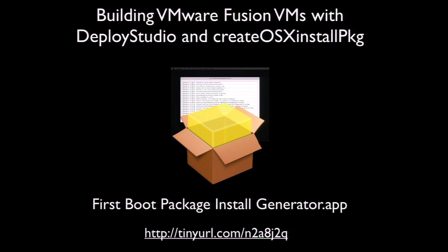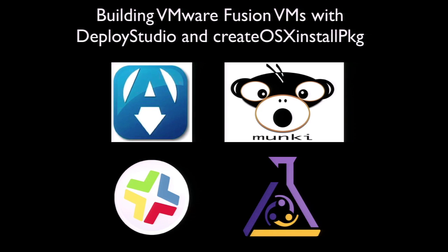The FirstBootPackageInstallGenerator installer, along with the app's components and scripts, are available from GitHub using the link on screen. One potential use of a FirstBootPackage would be to allow you to add a systems management agent like Casper, Puppet, AbsoluteManage, or others to the OS installer. Once the agent reported in, the systems management tool could have its agent install additional software and scripts to configure that VM. One management tool that would not require FirstBootPackage would be Munki, also developed by Greg Nagel, whose tools can be added directly to a Create OS X Install PKG-built OS X installer.